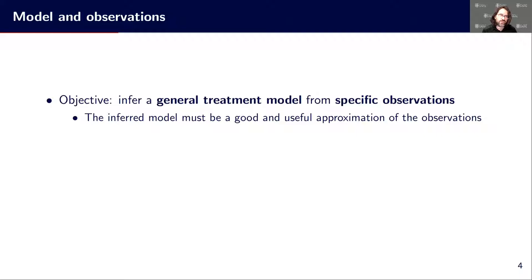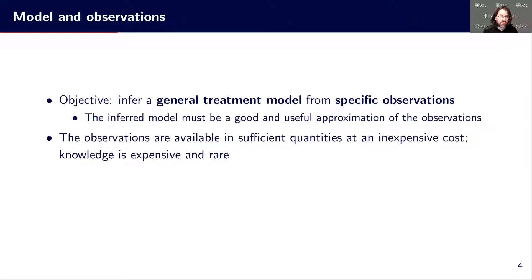The point with machine learning is to infer a general treatment model from specific observations. So we want the model to be general, to generalize — to provide a good and useful approximation of the observations. The observations are relatively specific, like specific cases, and we want to get the general rule from that. In many cases, observations are available in sufficient quantities and they are not expensive to obtain. We can get many samples, many observations, and this is often cheap, while getting the knowledge — which often requires experts working hard to figure out what's going on — can be quite expensive and much more rare.